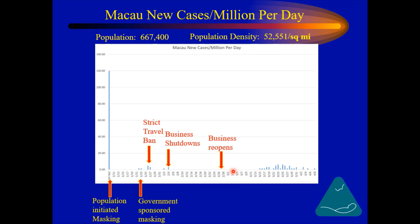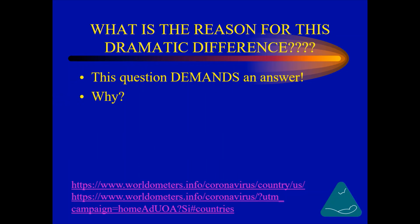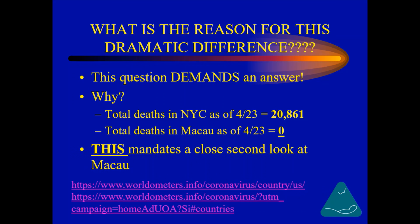Afterwards, nothing happened until a couple of cases began again, and these were initiated from travelers from outside of Macau. I hope you're asking yourself: what is the reason for this dramatic difference? This question demands an answer. Why? Because the total deaths in New York City as of April 23rd is 20,861. The total deaths in Macau as of April 23rd is zero. That's zero. This mandates a close second look at Macau by everyone.